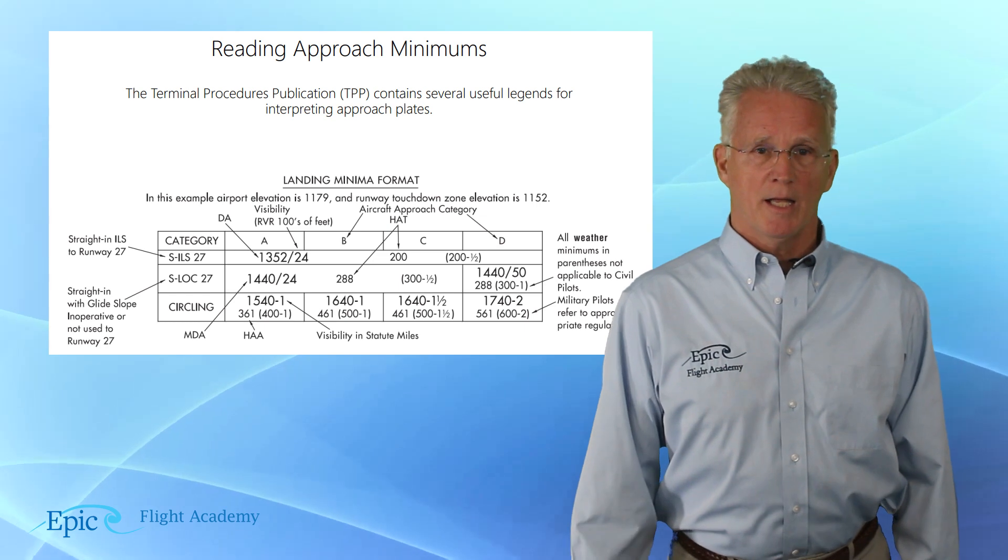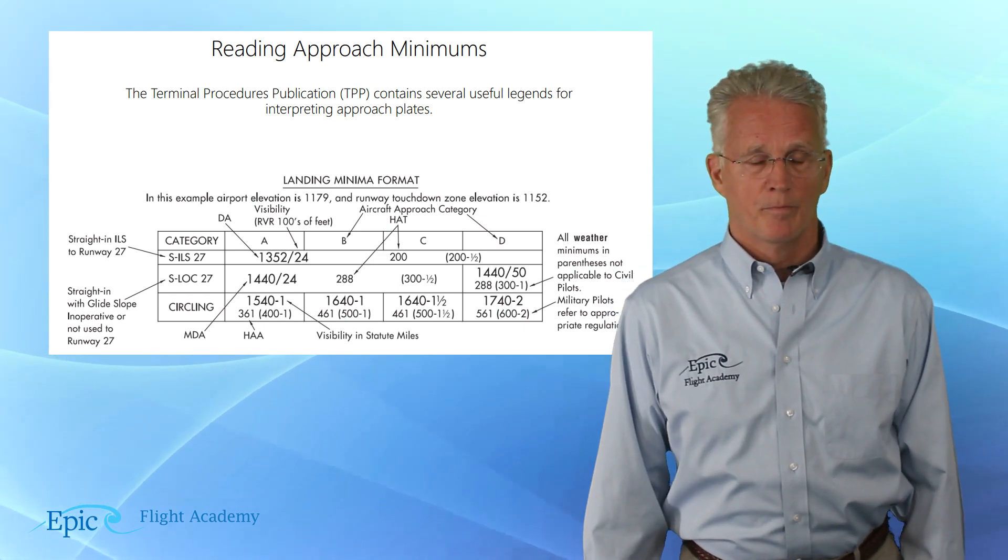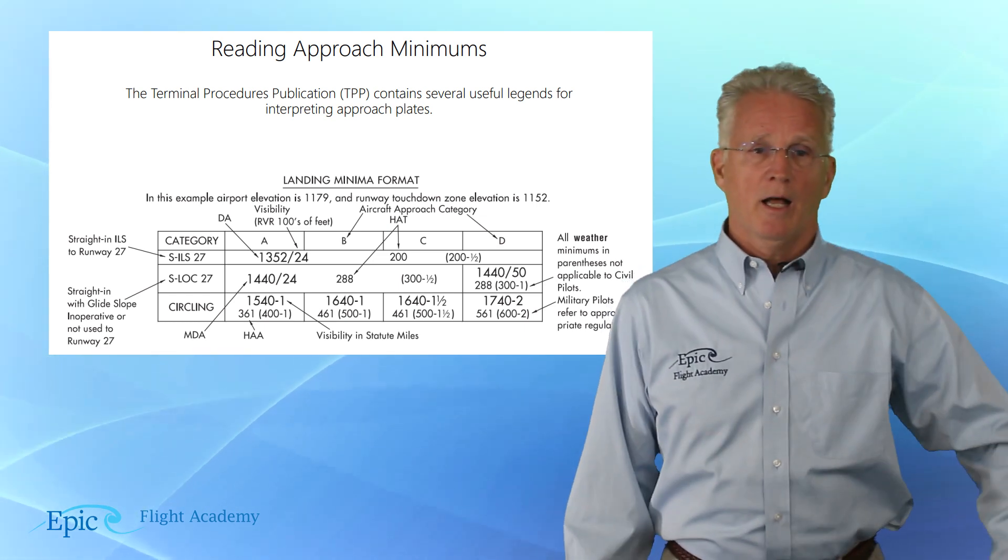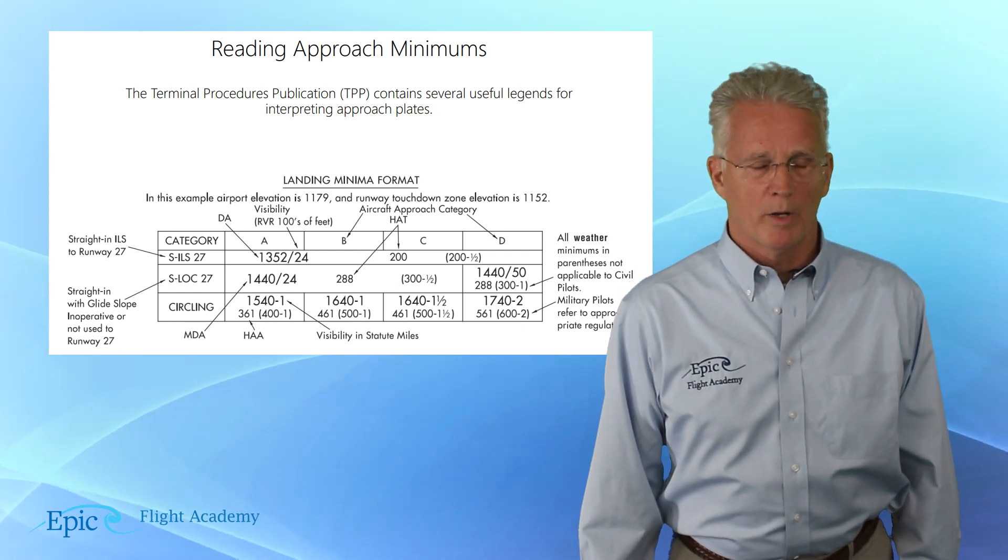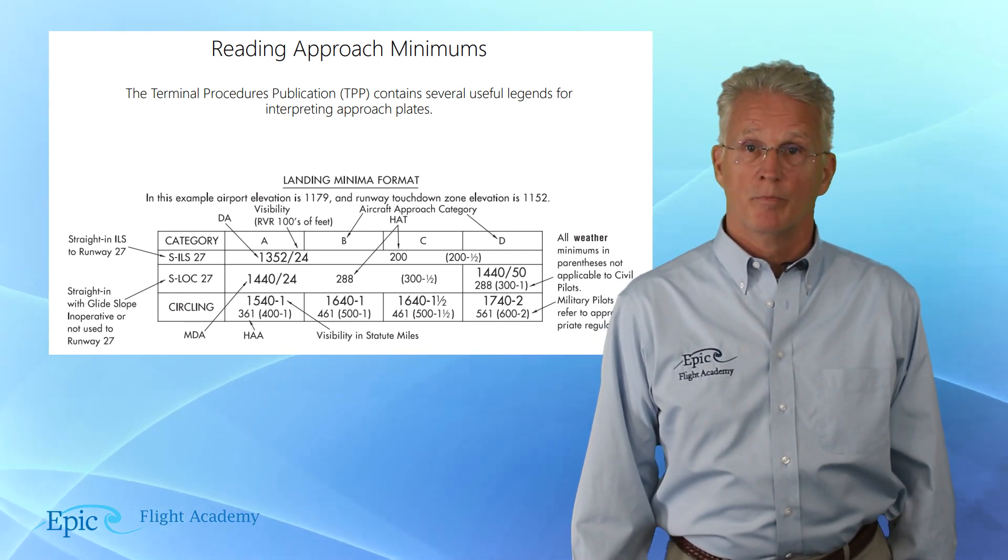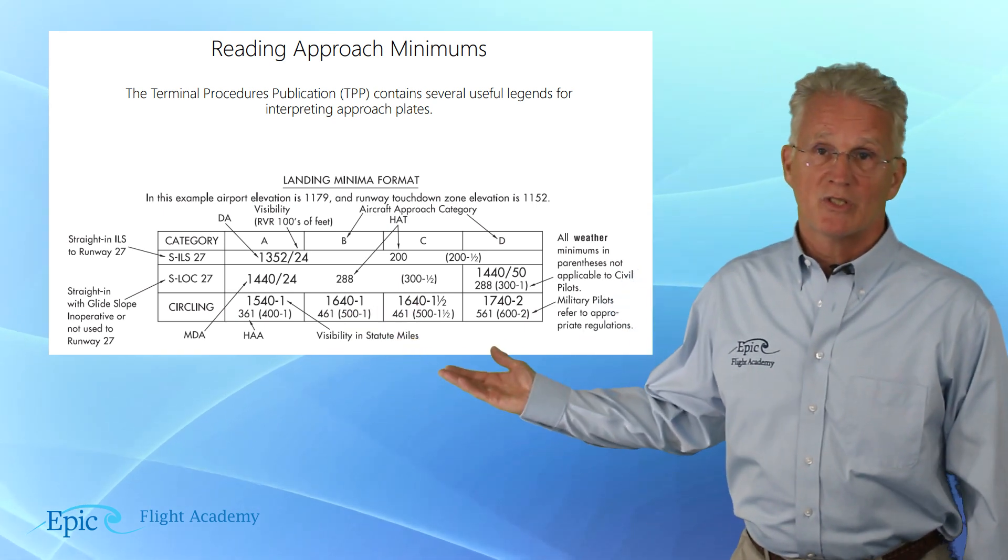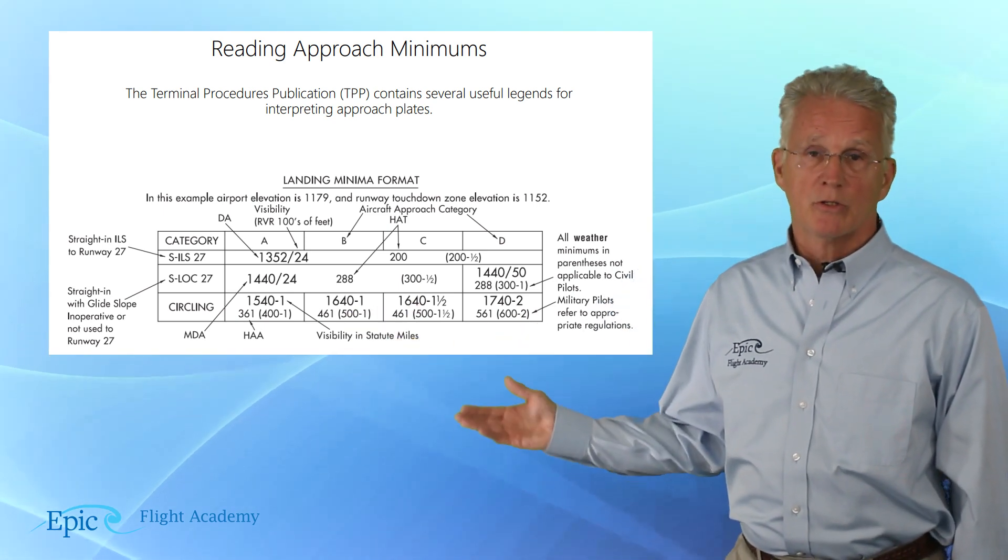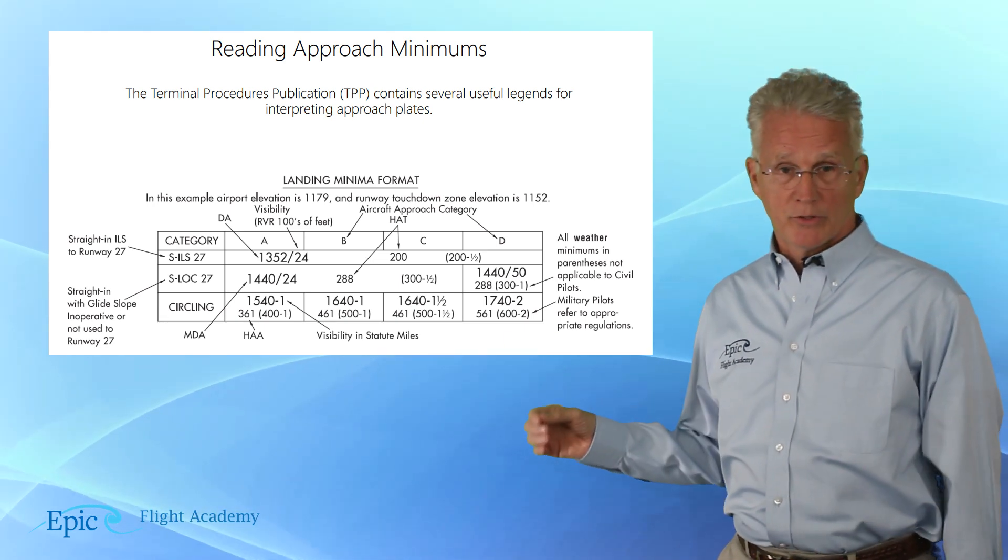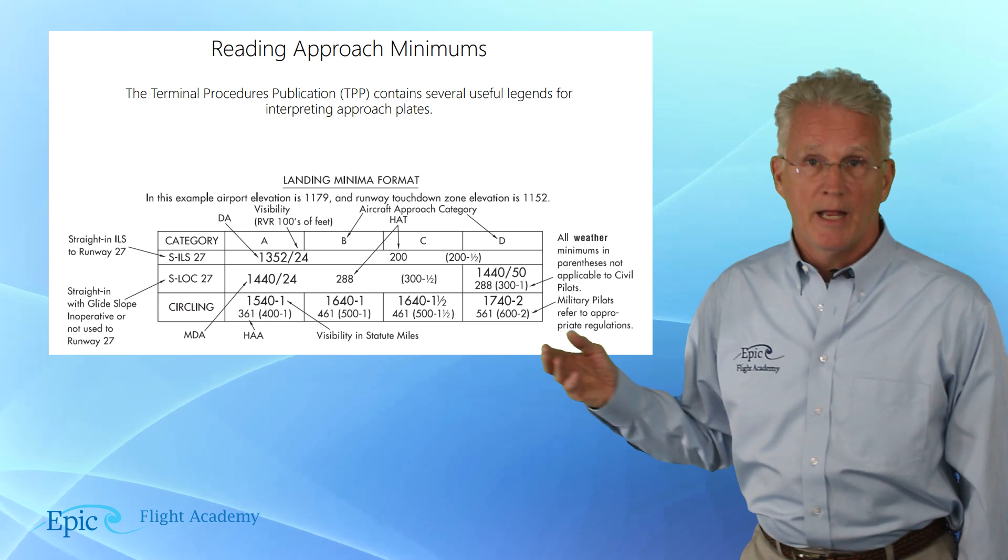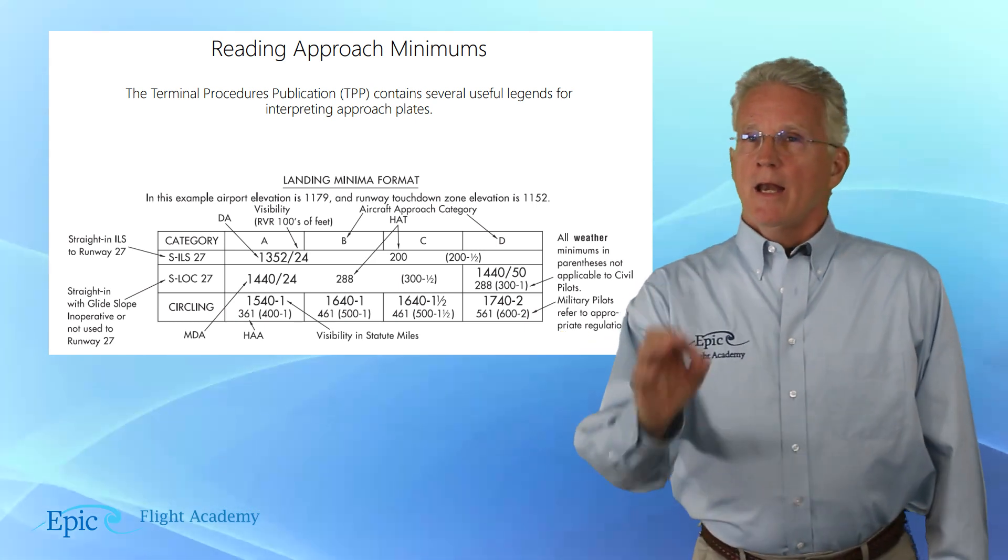Notice across the top, we have categories A, B, C, and D. Down the left-hand column, we have assigned runways and/or circling. In this case, we see S-ILS-27 and S-LOC-27 and circling.